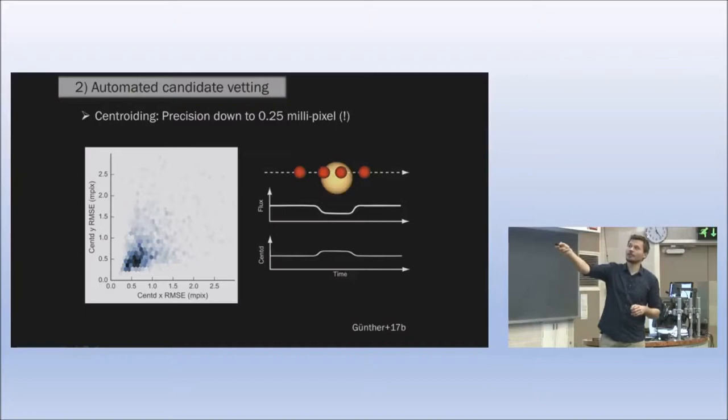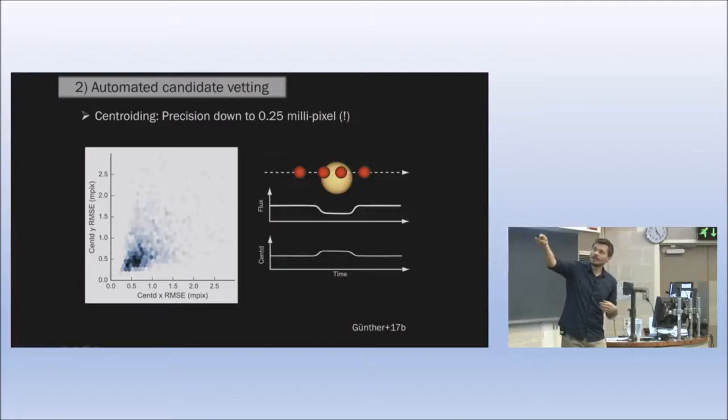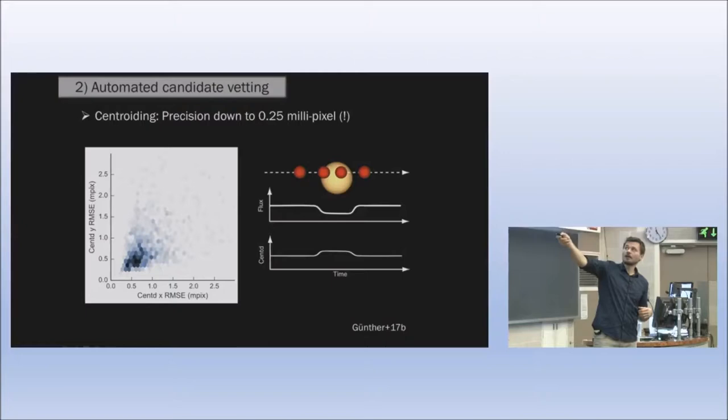We achieve a precision down to 0.25 millipixels, less than a thousandth of a pixel. We can see here in this diagram, on the x-axis we see the centroid in x, the scatter, the RMSE. On the y-axis we have the centroid in y RMSE. We see down to 0.25 millipixel in the best case, around 0.7 millipixel in average. Even the worst cases are around 1 over a thousand pixel precision on this centroid time series.